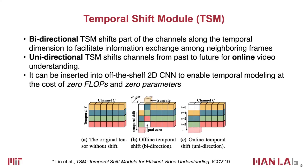The tensor has three dimensions: temporal (four frames vertically), channel (six channels horizontally), and spatial. When using 2D CNN to process a video, convolution is performed on each frame independently — so there is no temporal information exchange, and each row has only one single color.